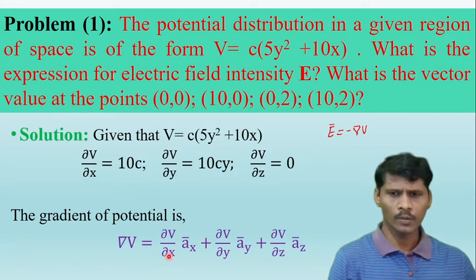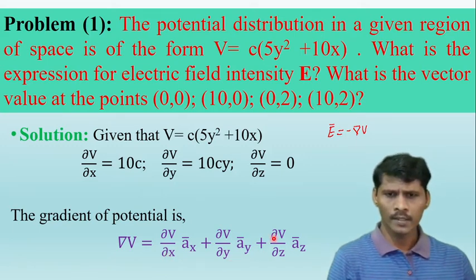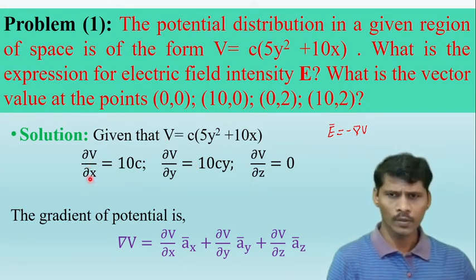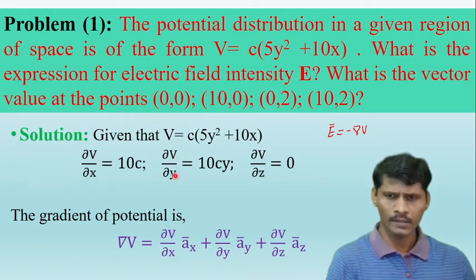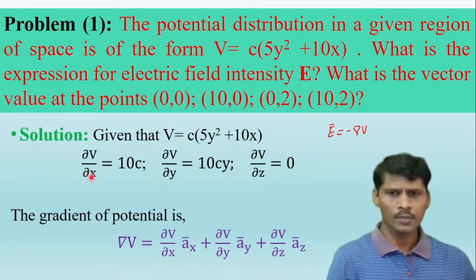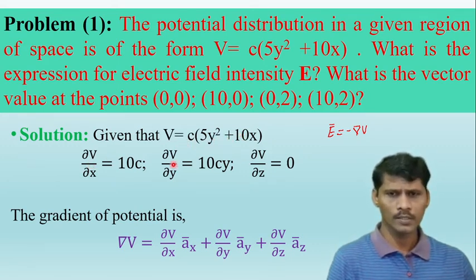First, calculate ∂V/∂x, ∂V/∂y, and ∂V/∂z. Differentiating the given potential V with respect to x, with y and c treated as constants, we get ∂V/∂x = 10c.